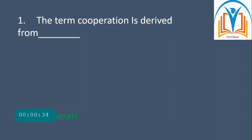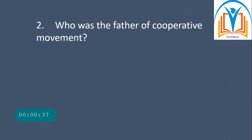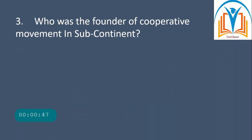The second MCQ is: who was the father of the cooperative movement? The answer is Robert Owen. Third question: who was the founder of the cooperative movement in the subcontinent? He was Lord Curzon.